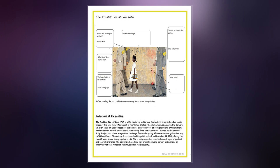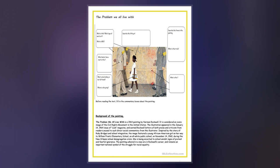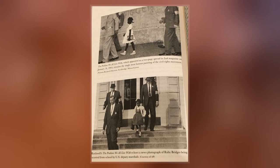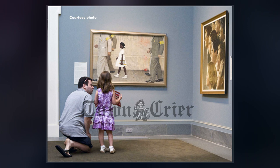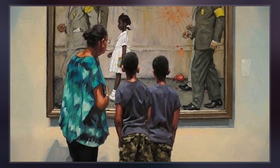The painting was originally published as a centerfold in the January 14, 1964 issue of Look. Rockwell had ended his contract with the Saturday Evening Post the previous year due to frustration with the limits the magazine placed on his expression of political themes, and Look offered him a forum for his social interests, including civil rights and racial integration.